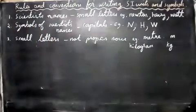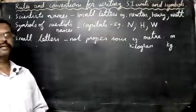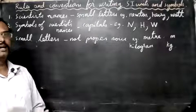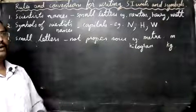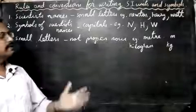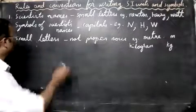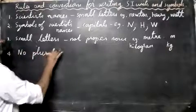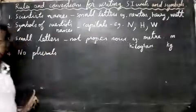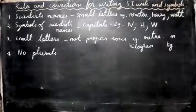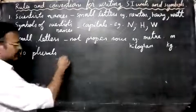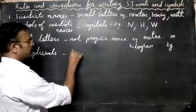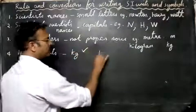The fourth rule: no plural forms should be used with SI symbols. For instance, if you buy 10 kilos of rice or 10 meters of cloth, you do not add an 's' to the symbol. 'kg' is correct, but 'kgs' is wrong.